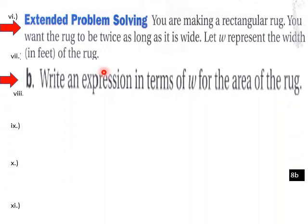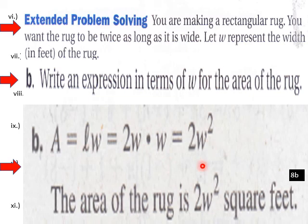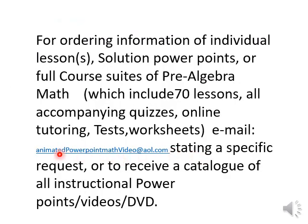Now part B: write an expression in terms of W for the area of the rug. Area equals length times width, and we have 2W times W, so the area of the rug is 2W squared square feet. And that's your lesson for today. For questions or course materials, visit the animated PowerPoint math video at AOL.com. Thank you very much.